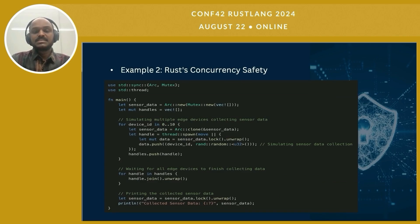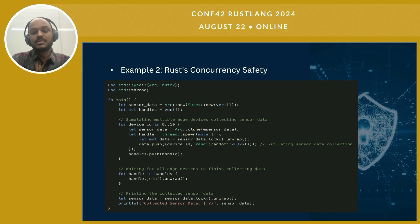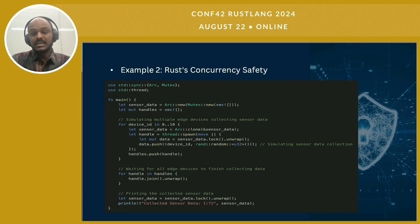This next example demonstrates how Rust ensures concurrency safety using threads. In this code, multiple threads simulate edge devices collecting sensor data concurrently. The Arc allows the sensor data to be shared across threads, and Mutex ensures that data is safely accessed and modified by only one thread at a time. Rust's ownership and concurrency model prevent data races, ensuring that even in a multi-threaded environment the data remains consistent and secure. After all the threads finish, the collected sensor data is safely printed, demonstrating Rust's ability to handle concurrent operations without compromising safety.